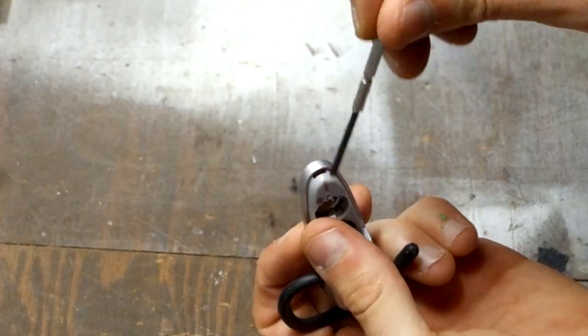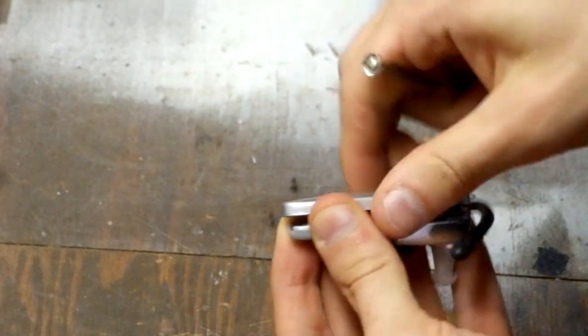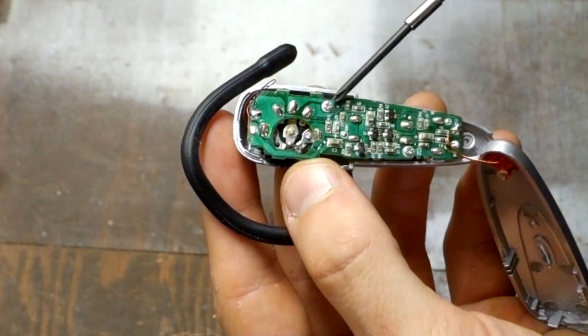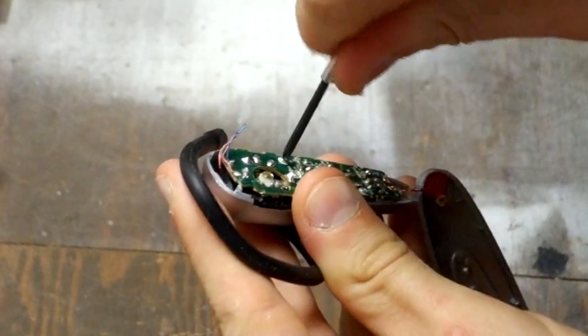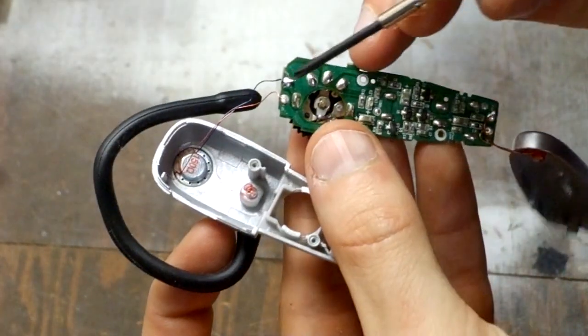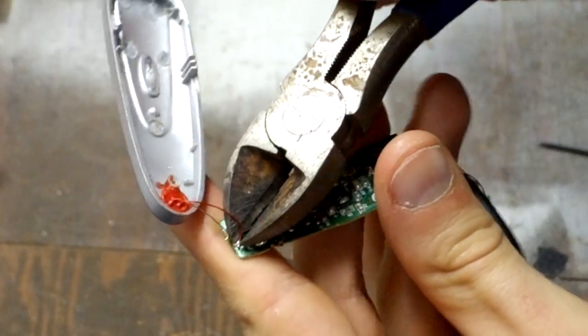Next, we'll use a flat screwdriver to pry the case apart. Now there's two more screws we have to remove to take the circuit board out. This is where the microphone connects to the board. Let's go ahead and remove the microphone connectors.